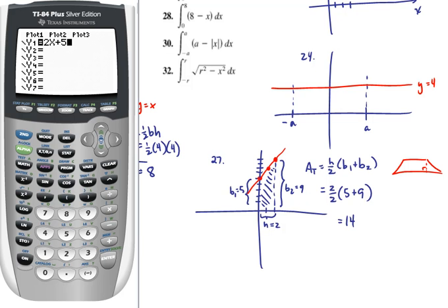Once again, I'll step through using the graphing calculator. We'll put in the function 2x plus 5, go to the graph of that, then 2nd, trace, or calc, option number 7, which is the integral.